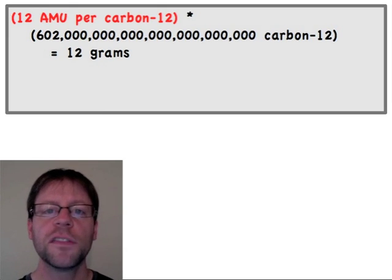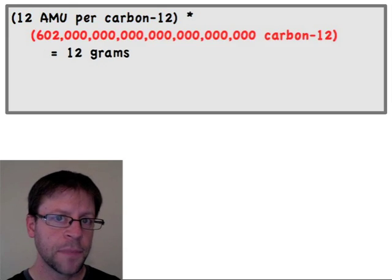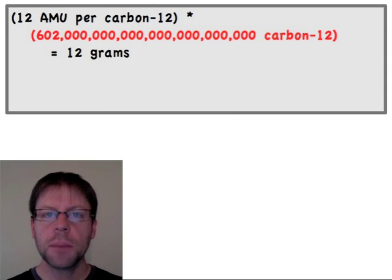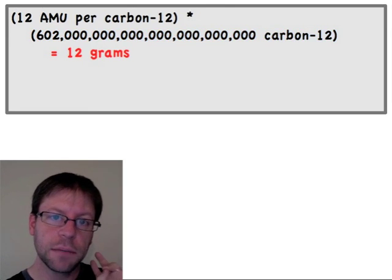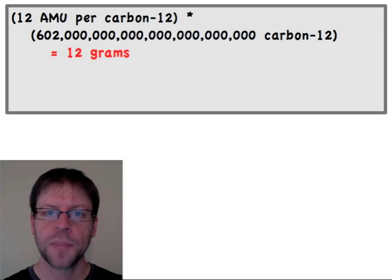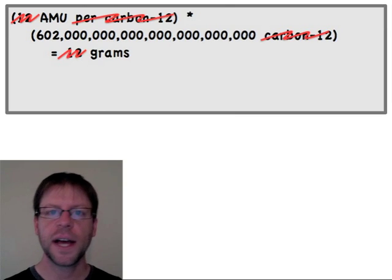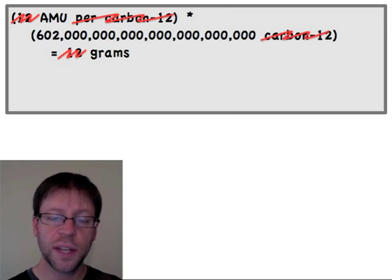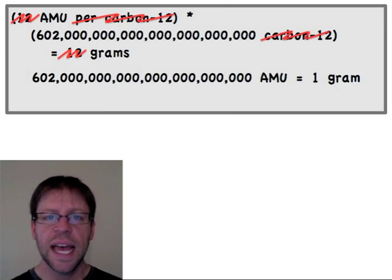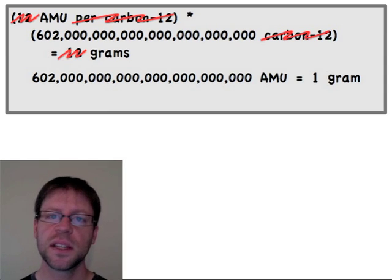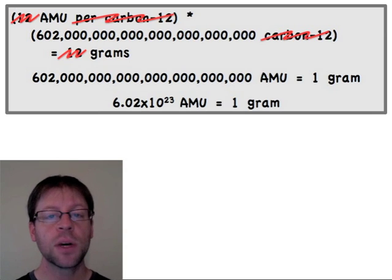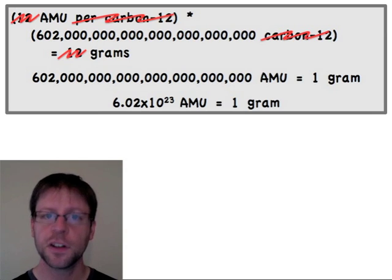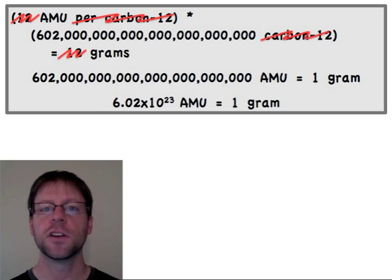Let's do the quick math: carbon-12 has 12 AMU per atom. I put 6.02×10²³ of them on the scale and multiply those two things together to get 12 grams. Simplifying — the 12 cancels from both sides — and I find that 6.02×10²³ AMU equals 1 gram. That is now a valid conversion factor. But that number has even more use for us in chemistry.